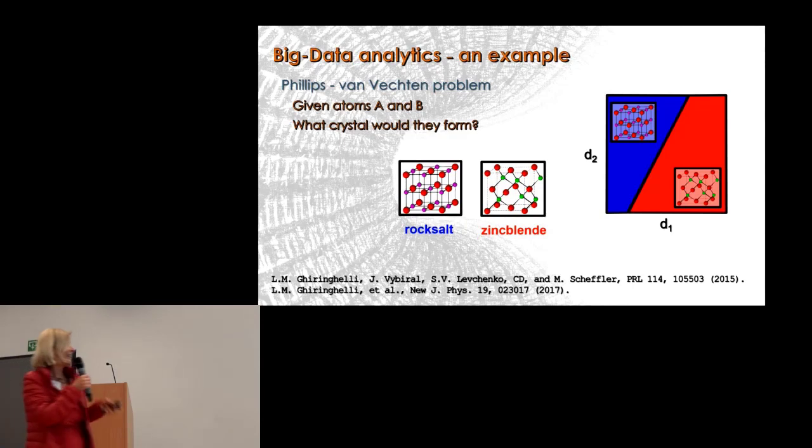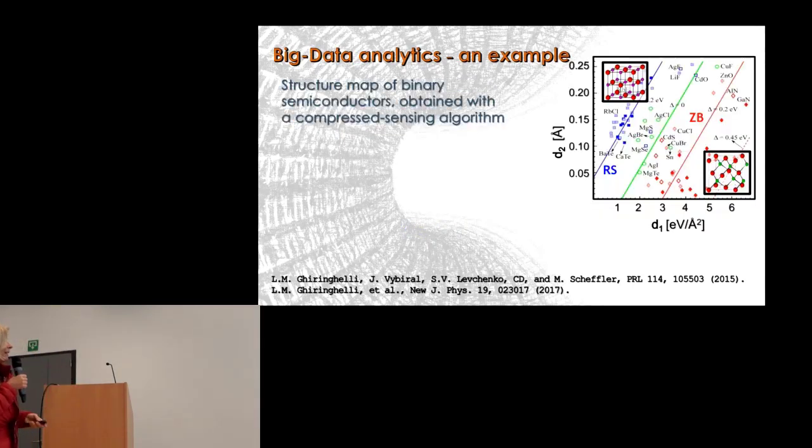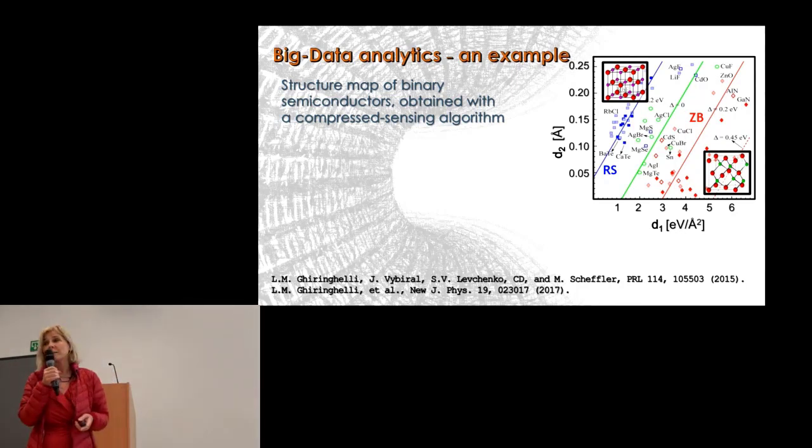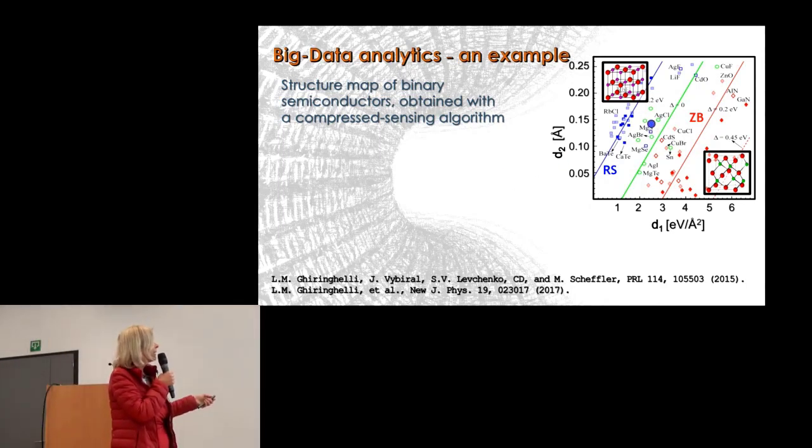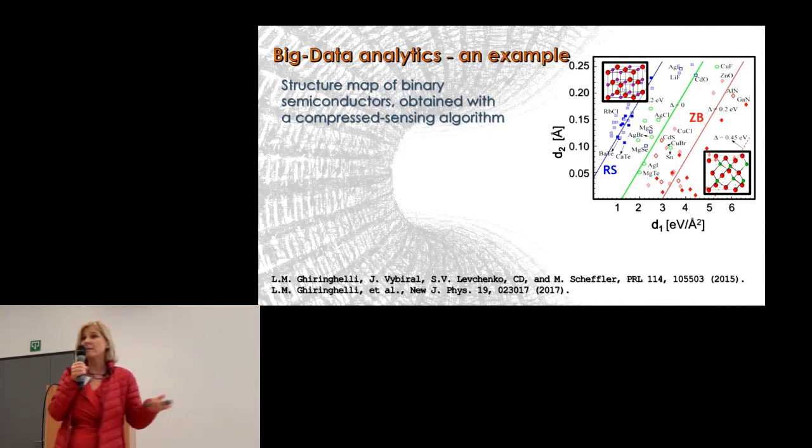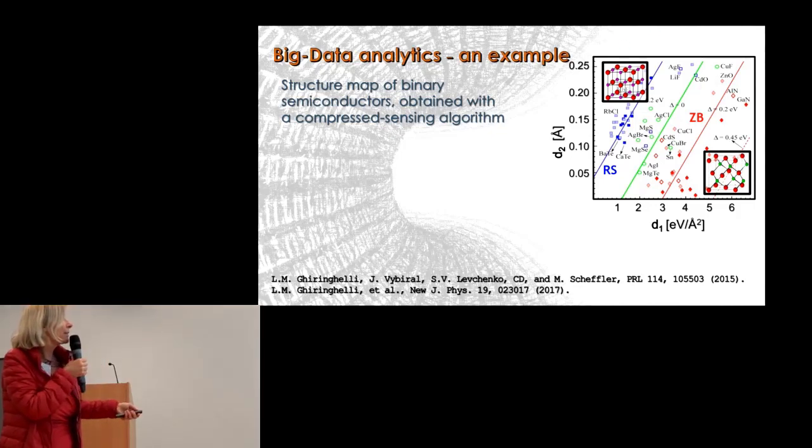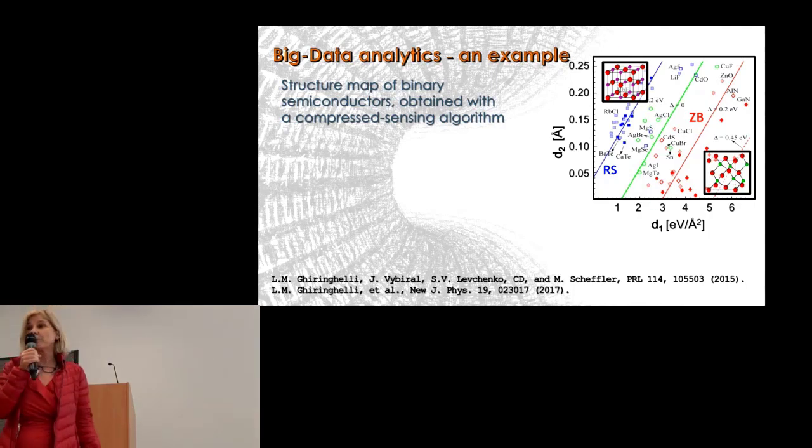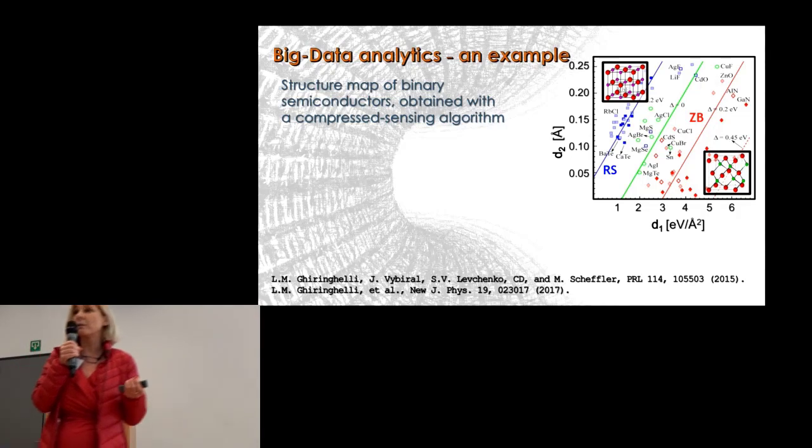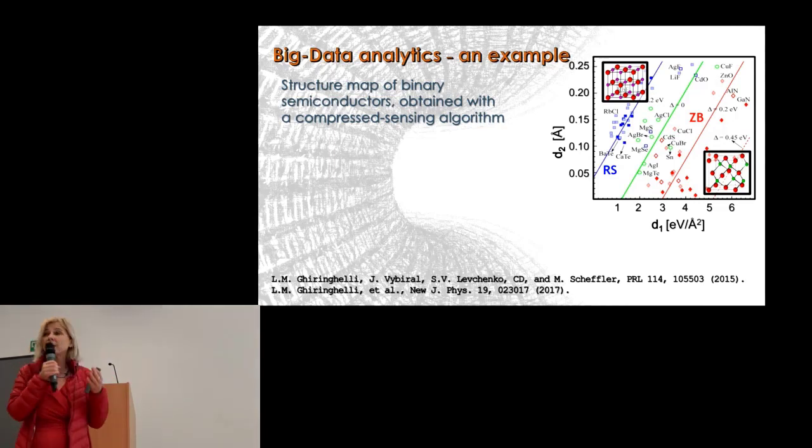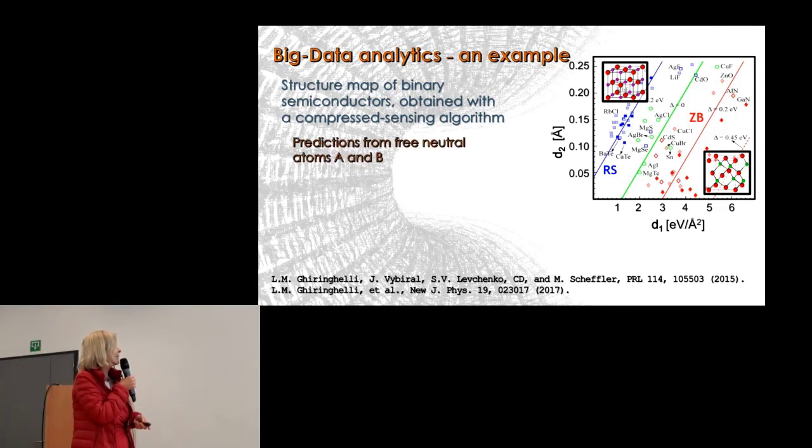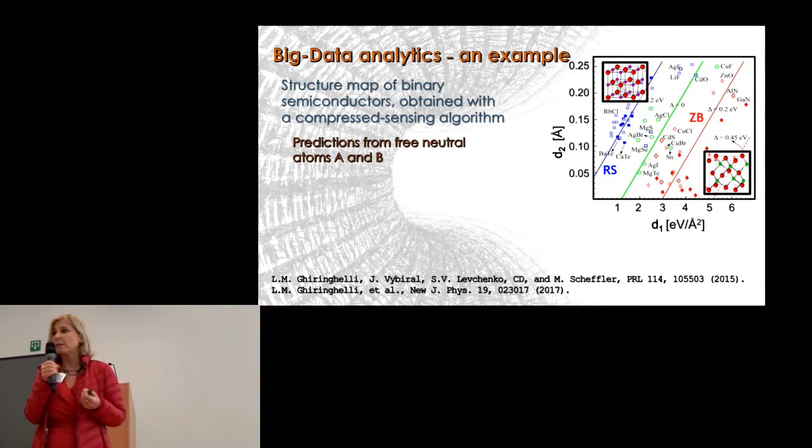I'll show you the solution of this problem that we obtained with a compressed sensing algorithm, a method of statistical learning or artificial intelligence. This is just a two-dimensional description. What you see here in the color code is that everything blue shows the total energy difference in favor of rocksalt, whatever is red is in favor of zincblende structure, and everything green shows the total energy difference is so small you can hardly distinguish. You see from a two-dimensional description that we get a separation of these two structures.